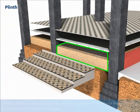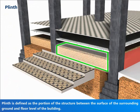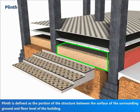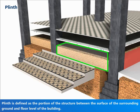Plinth is defined as the portion of the structure between the surface of the surrounding ground and floor level of the building.